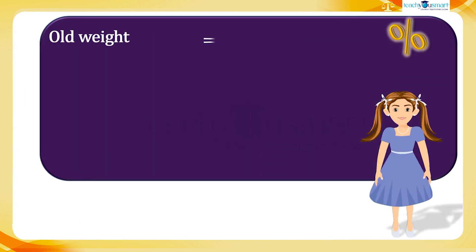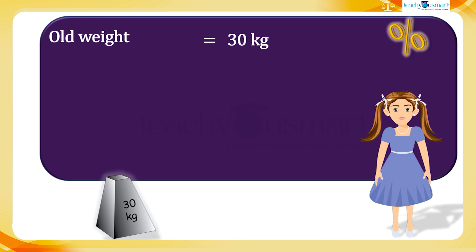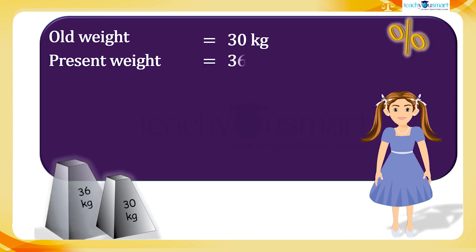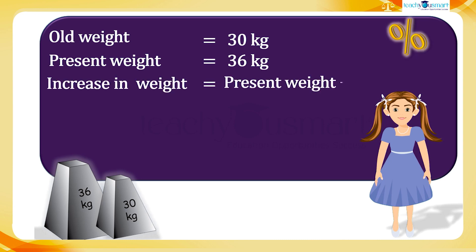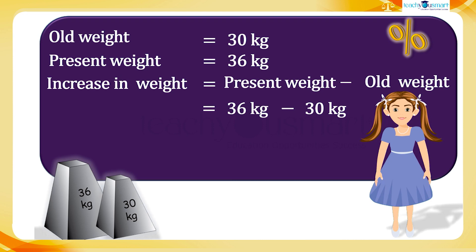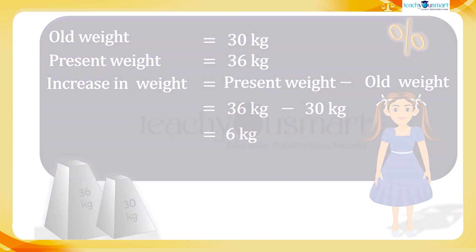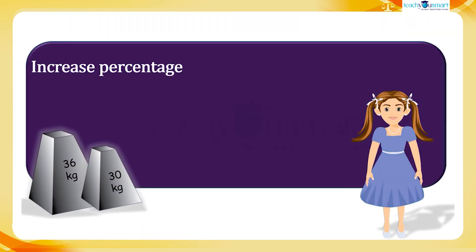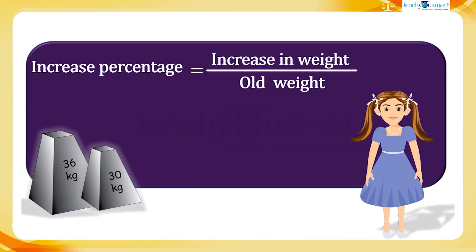Two years before, Rina's weight was 30kg. Present weight is 36kg. Then the increase in weight is the present weight minus the old weight, equals 36kg minus 30kg, equals 6kg. Now we can find the increase percentage. Increase percentage equals increase in weight divided by old weight multiplied by 100, equals 6 divided by 30 multiplied by 100, equals 20%.